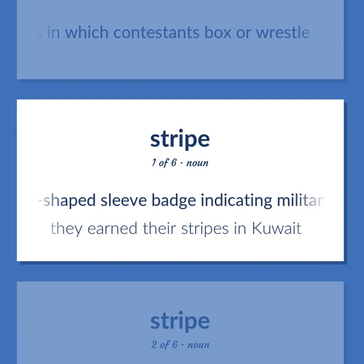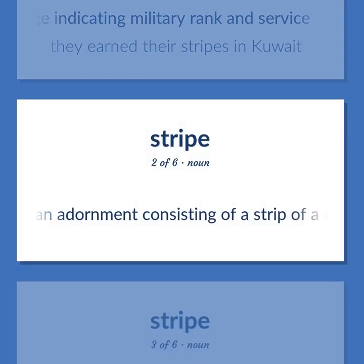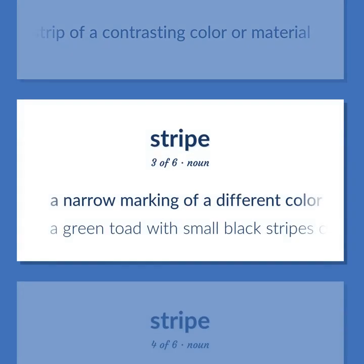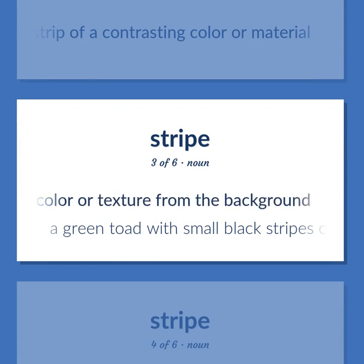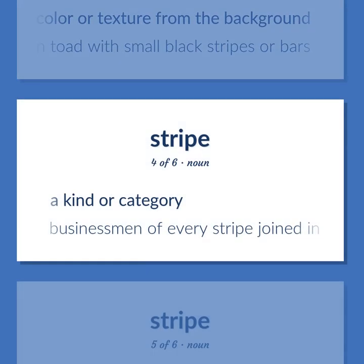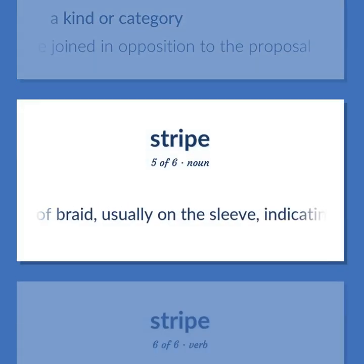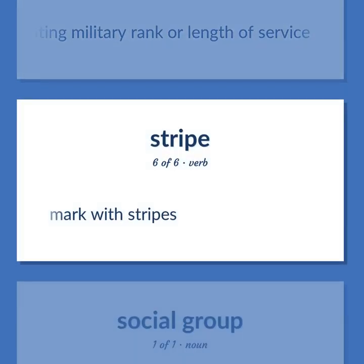V-shaped sleeve badge indicating military rank and service. They earned their stripes in Kuwait. An adornment consisting of a strip of a contrasting color or material. A narrow marking of a different color or texture from the background. A green toad with small black stripes or bars. A kind or category. Businessmen of every stripe joined in opposition to the proposal. A piece of braid, usually on the sleeve, indicating military rank or length of service. Mark with stripes.